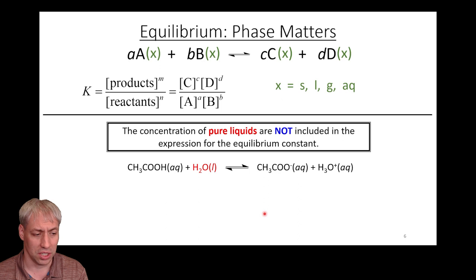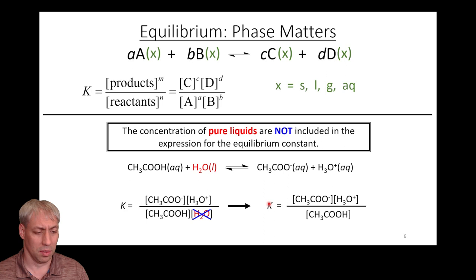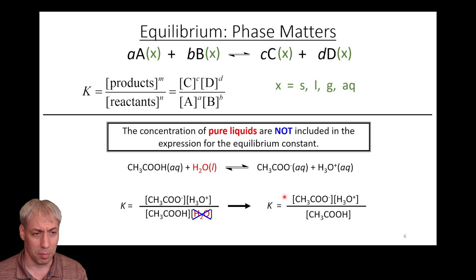Take this example: acetic acid, which is vinegar, thrown into water as the solvent, H2O — you end up with acid-base chemistry. You can see aqueous, aqueous, aqueous, but H2O is liquid. For all intents and purposes, the concentration of the liquid is gigantic, so what ends up happening is if something is in a liquid phase, we remove it from the equilibrium equation. It changes so little that it doesn't affect the calculation — this has to do with activities. We remove pure liquids from our equilibrium equations, so it's still products over reactants, but if one reactant is a pure liquid, we remove it.